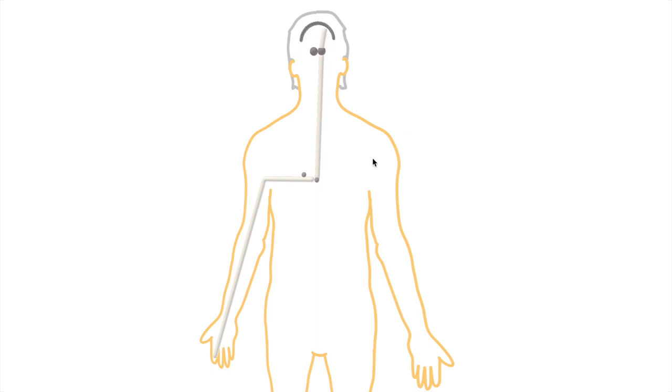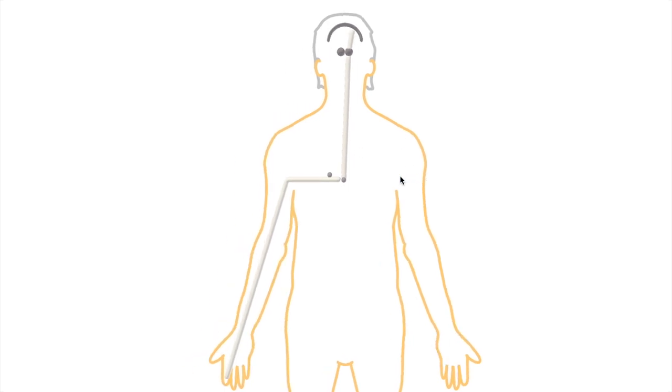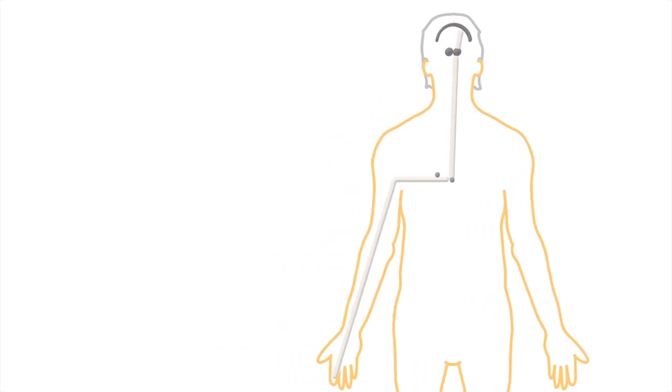Now before we go any further, let's just cover some brief revision. Neurons consist of axons and cell bodies. Individually these are microscopic, but when bunched together they appear white and grey in the central nervous system, i.e., the brain and the spinal cord.